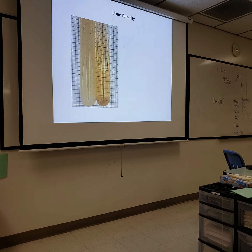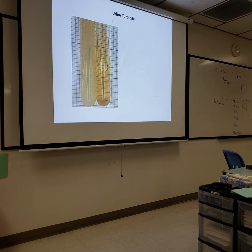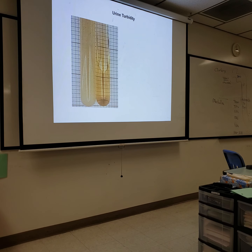Turbidity has to do with cloudiness. You can see in the tube on the left they're almost the same color, but in the tube on the left you can't see the graph lines, whereas in the tube on the right you can. High turbidity means less transparent. That can be from an infection, from bacteria or pus, usually from the bladder.